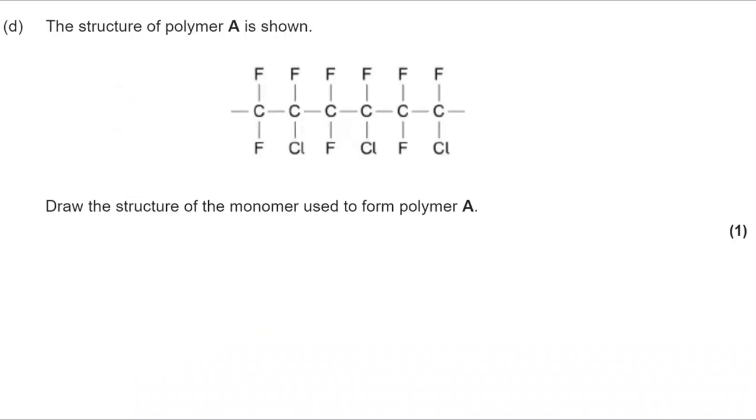We then move on to part D. The structure of polymer A is shown. Draw the structure of the monomer used to form polymer A. So the trick here is to find the smallest possible repeating unit and the smallest possible repeating unit I've put here in three different colours.